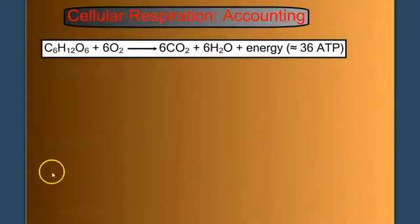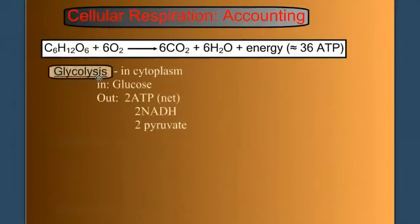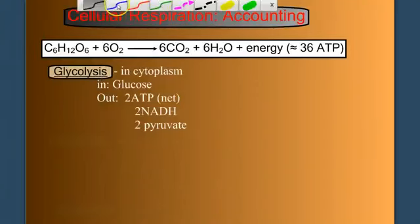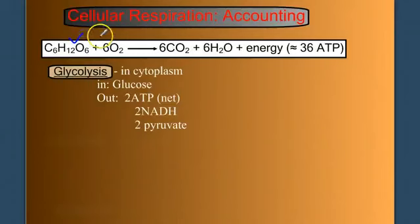Finally, let's finish with a little counting. Here's the overall reaction for respiration. And we've accomplished so far just glycolysis. So let's take into account what we have and have not done yet. So we use glucose. Check. We're done with that. We've yet to use oxygen, and we've yet to make carbon dioxide. And we've yet to make water. But we have made some ATP, but only two. So we have approximately 34 ATP left to make.